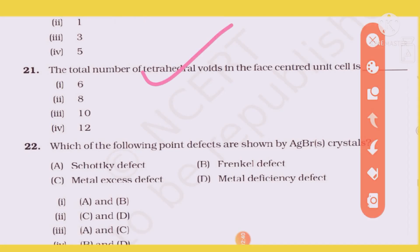Next question: Total number of octahedral and tetrahedral voids in a face-centered cubic (FCC) unit cell. In FCC: there are 4 octahedral voids and 8 tetrahedral voids per unit cell.